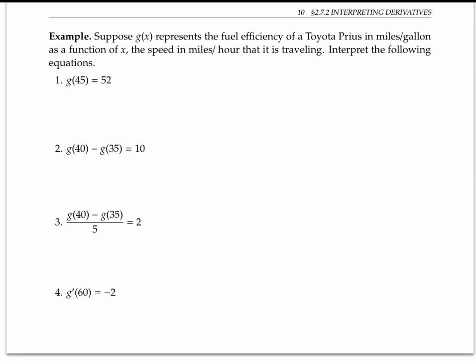g of 45 is 52 means that at 45 miles per hour, the fuel efficiency is 52 miles per gallon.